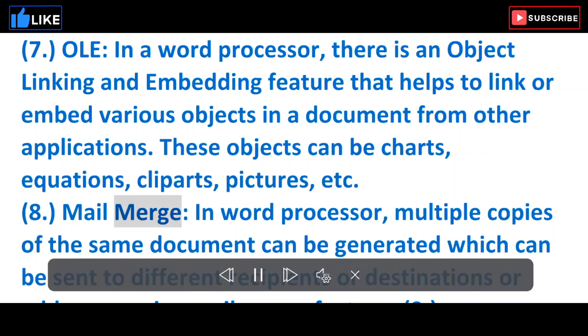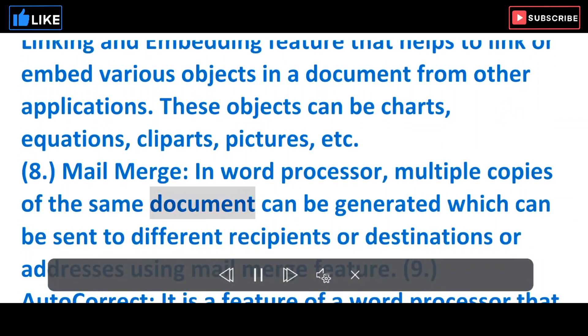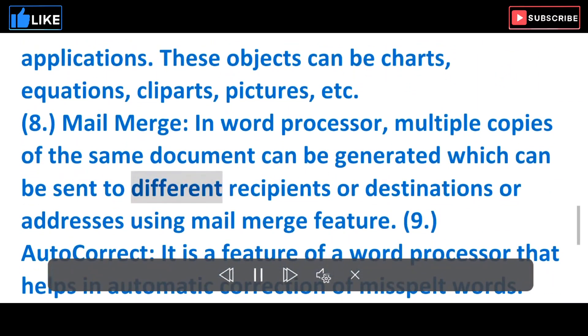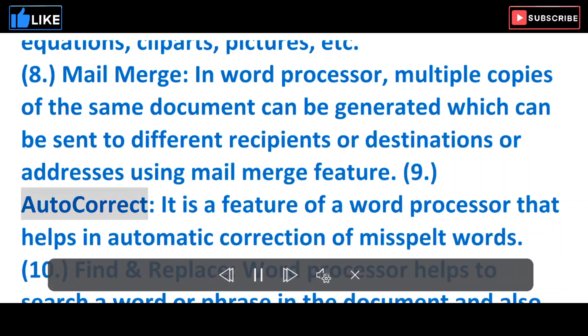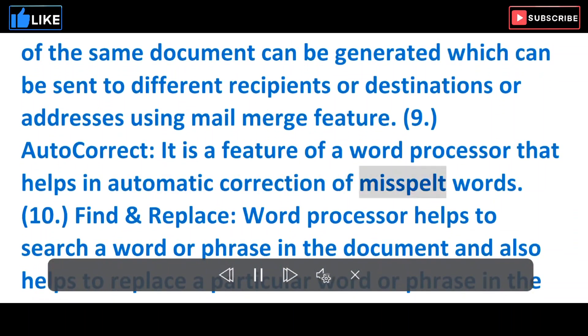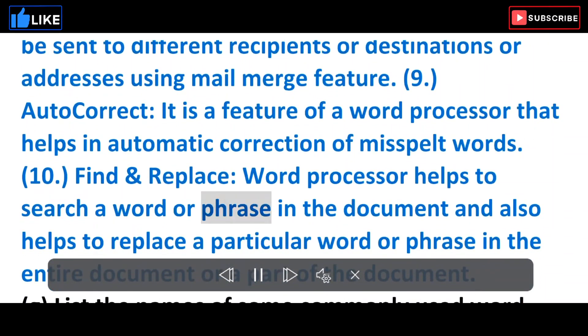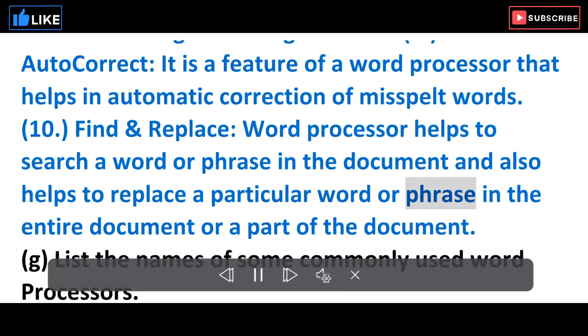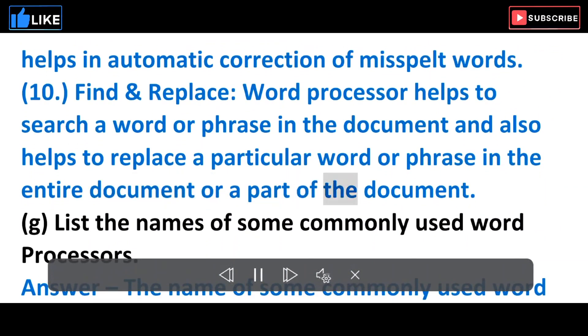8. Mail Merge - In word processor, multiple copies of the same document can be generated which can be sent to different recipients or destinations or addresses using Mail Merge feature. 9. Autocorrect - It is a feature of a word processor that helps in automatic correction of misspelled words. 10. Find and replace - Word processor helps to search a word or phrase in the document and also helps to replace a particular word or phrase in the entire document or a part of the document.